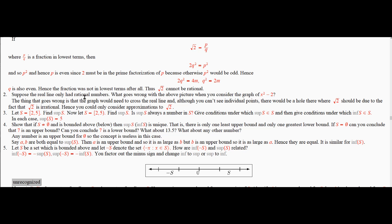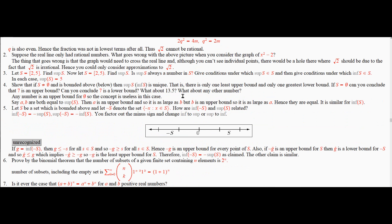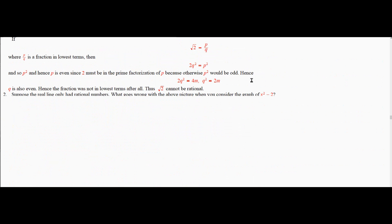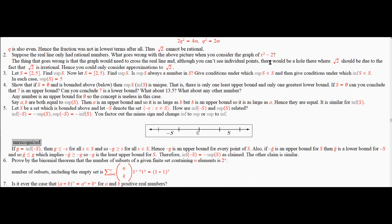Now, if the real line had only rational numbers, the argument given above wouldn't work. Because you could look at the graph of x squared minus 2, and if x is 0 it starts off at negative 2, and if x is 3 it goes up to 4. Then you'd ask where will it intersect the real line? Well, if you only had rational numbers, there would be a hole where the square root of 2 was supposed to be. So this argument up here just wouldn't work at all. So why do we have roots? We have roots because the real line is complete.